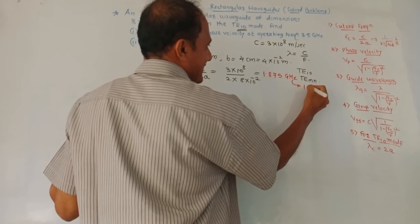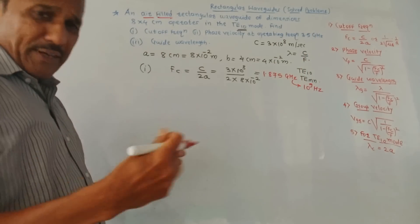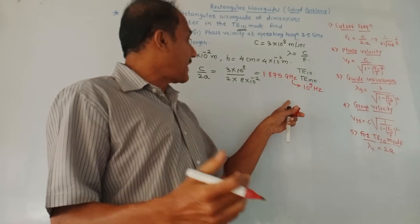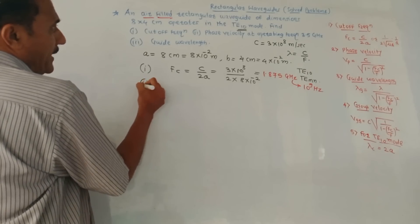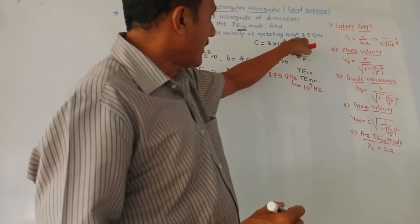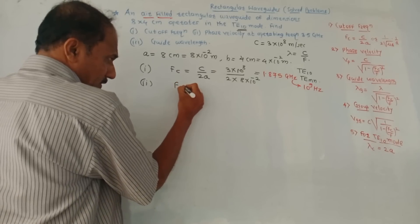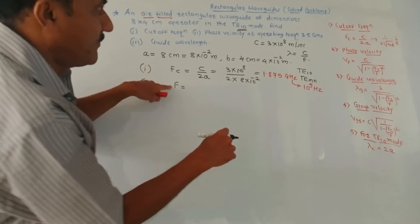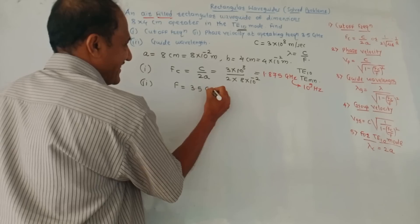Do remember gigahertz is 10⁹ hertz. Try to express the answer in terms of gigahertz. Then second part: phase velocity at the operating frequency of 3.5 gigahertz. This operating frequency is given. Operating frequency is denoted by f — don't get confused, fc is cutoff frequency, f is operating frequency — so f is 3.5 gigahertz, that is 3.5 × 10⁹ hertz.